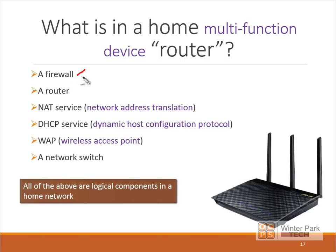What is in a home multi-function device — what people call a router — is many things: firewalls, a router, network address translation, a DHCP service, a wireless access point, and a network switch. There's actually more. We'll talk briefly about other functions and logical functionality inside this one device, and go through these one by one so you have a better understanding of each logical component.